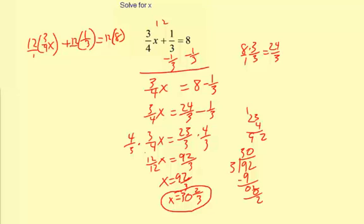And I'll put these over 1 here. So 12 times 3 is 36. 1 times 4 is 4. And then times x plus 12 times 1 is 12. Divided by 1 times 3, which is 3.